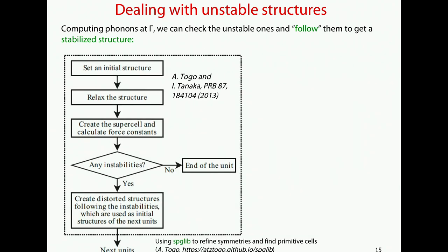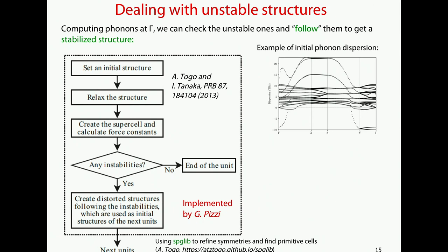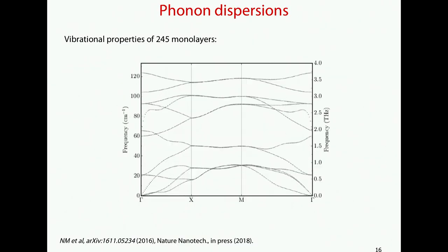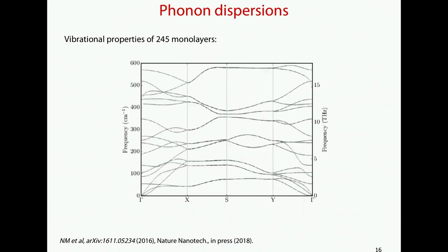How do you deal with stability? The idea is to relax the 2D structure, compute the force constants, and then look at possible unstable phonons at gamma, meaning imaginary frequencies. If there is one, you try to distort the structure to follow the instability, use this as an initial guess, and iterate. We use SPGLib from Atsushi Togo for the symmetry analysis. This allows going from a situation with a highly negative phonon at gamma to something well stabilized. In the end, we have 245 phonons computed, and we are now computing more.